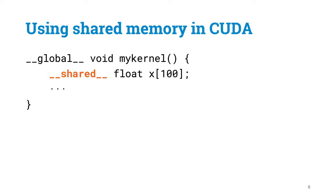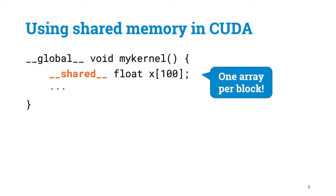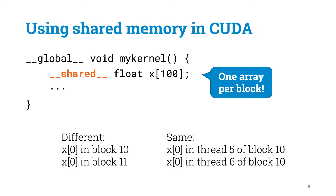Let's quickly see how to use shared memory. There are just two things you will need. First, to state that your kernel would like to use shared memory to store, for example, 100 floats, you just add this line in the beginning of the kernel code. The NVCC compiler will see that this kernel needs 400 bytes of shared memory per block, write it down in the metadata for this kernel function, and whenever you launch the kernel, CUDA will take care of allocating shared memory as needed. Keep in mind that each block has got its own array x — what is x[0] in block 10 is different from what is x[0] in block 11. However, all threads of a block share the same array x. For example, x[0] in thread 5 of block 10 refers to the same piece of storage as x[0] in thread 6 of block 10.